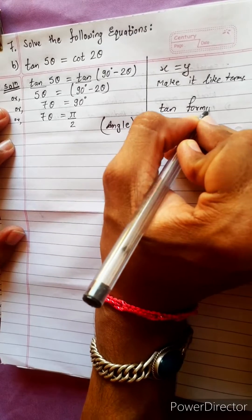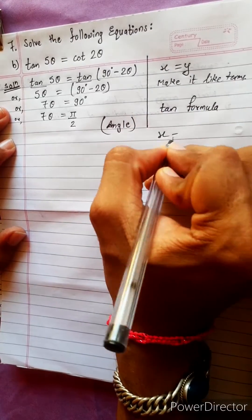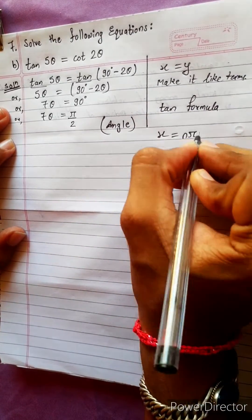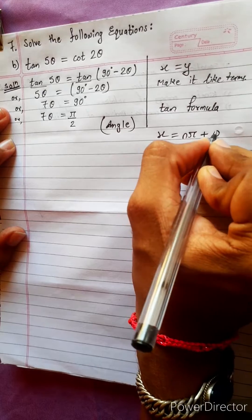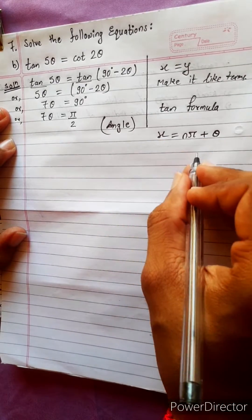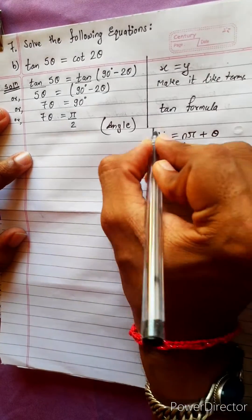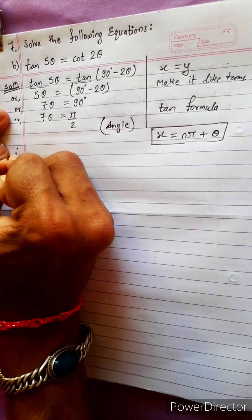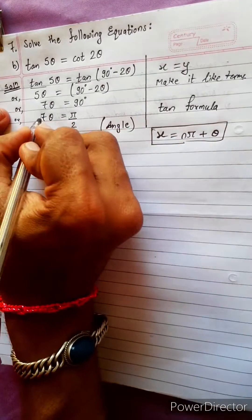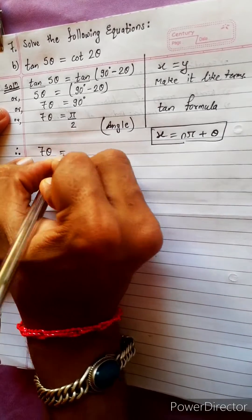For tan, the general solution formula is x equals to nπ plus θ. This is the formula in terms of tan. Now we will use this formula. Therefore, 7θ equals to nπ.